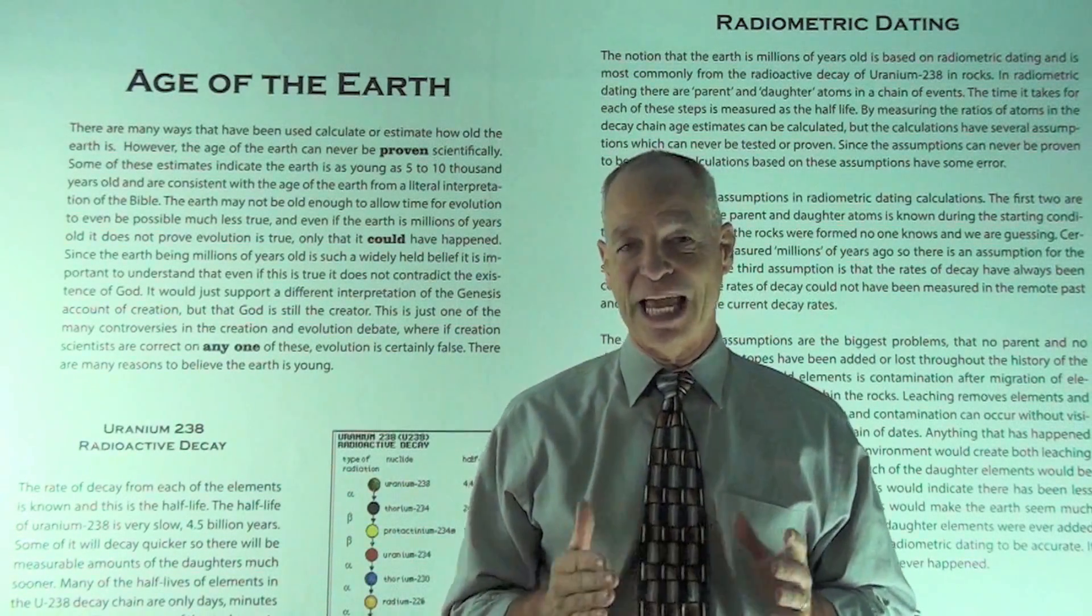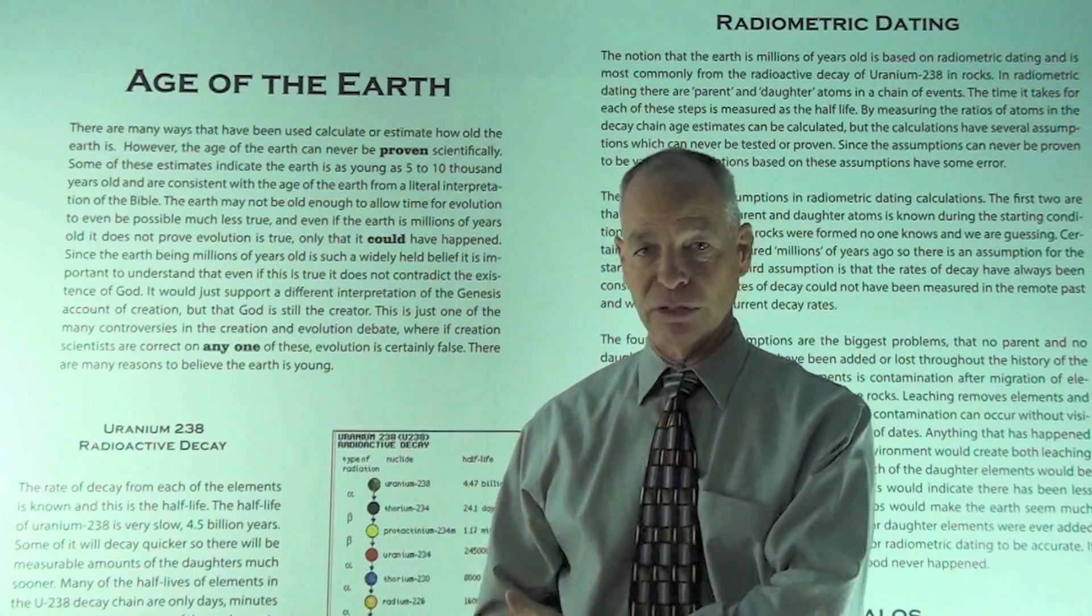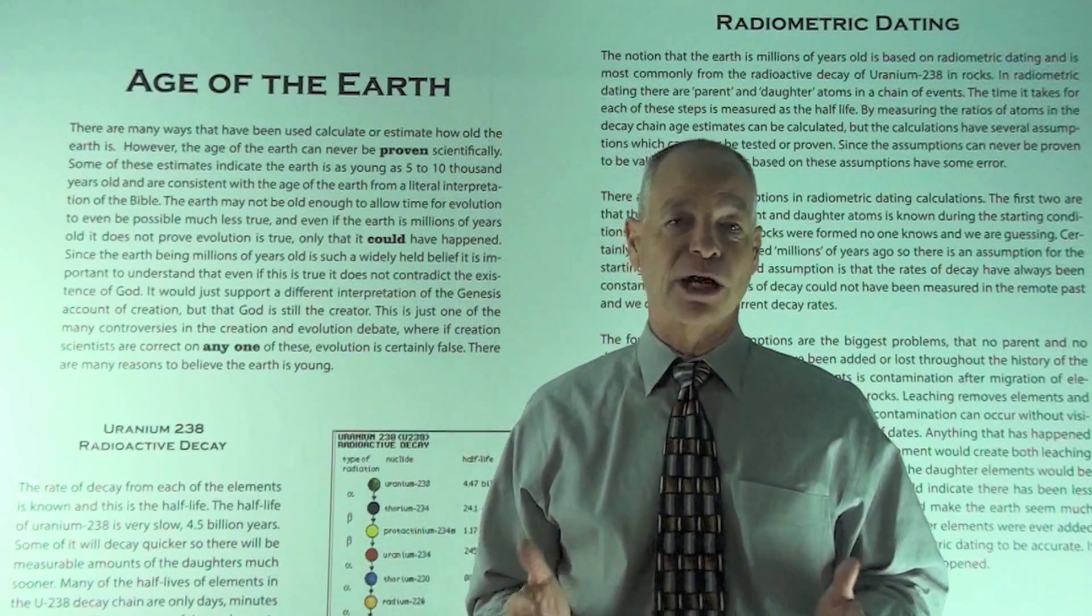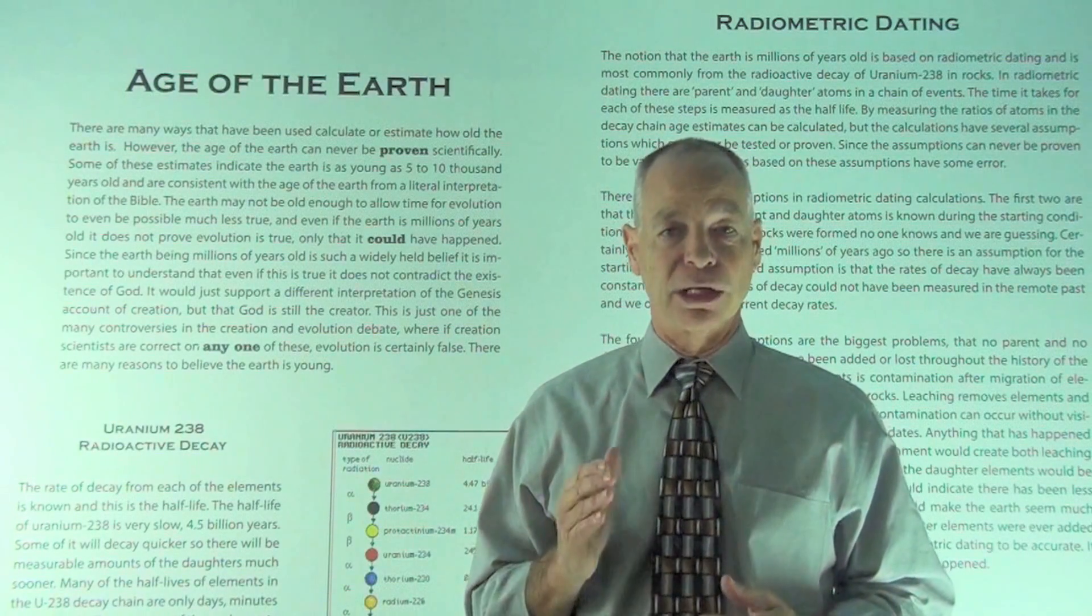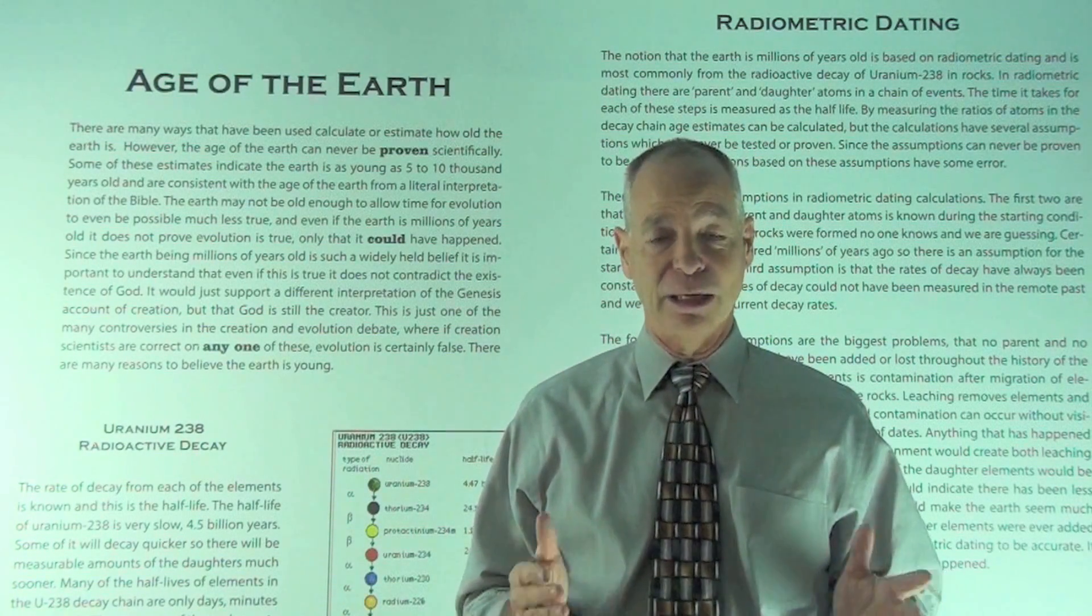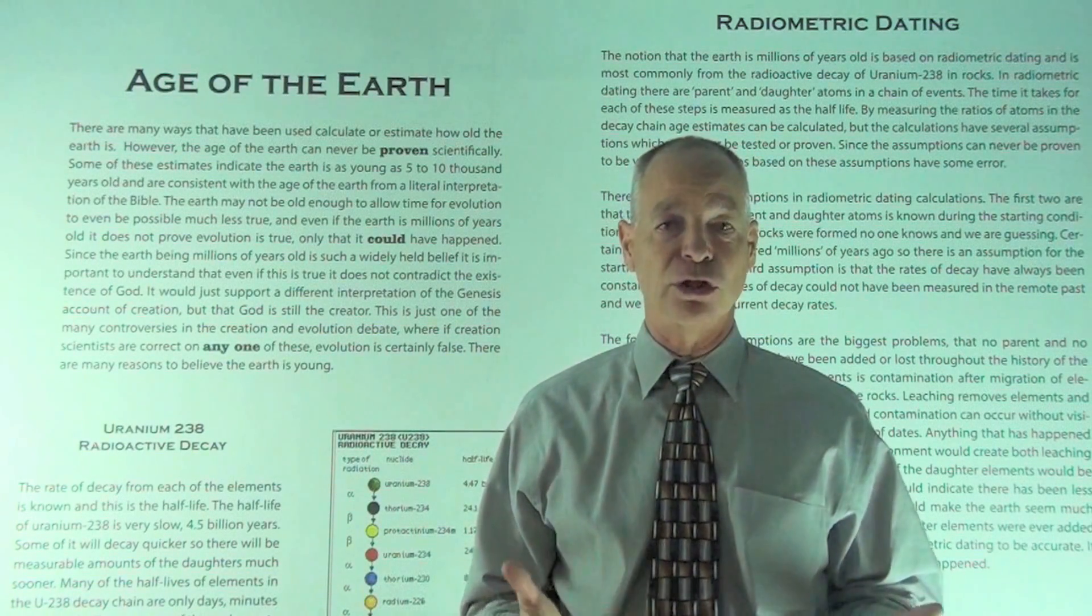The second one is that the rates of decay from the parent to the daughter for each of these steps has always been constant. We can measure these now and we know what the current rates of decay are for each step, but we don't know if that's been constant over all the time because there was no way to measure it. So it's just a third assumption.